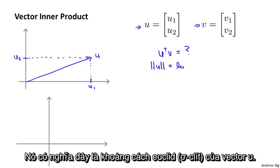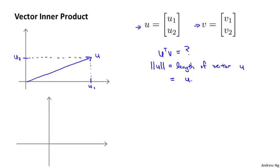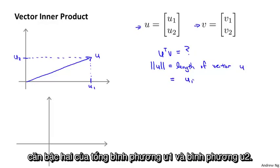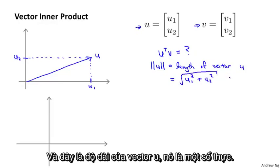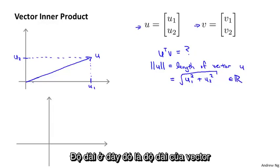One quantity that would be nice to have is the norm of the vector u — these double bars on the left and right denote the norm or the length of u. This is the Euclidean length of the vector u, and by Pythagoras' theorem, this is equal to the square root of u1 squared plus u2 squared. This is a real number representing the length of this vector.